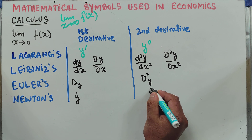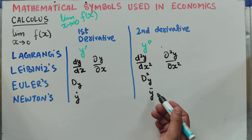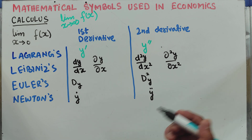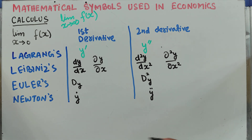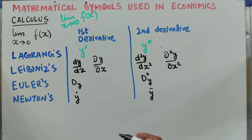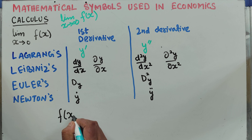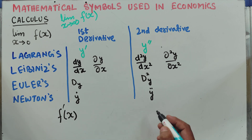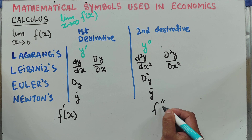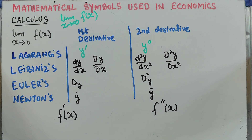Newton's second derivative is denoted by y double dot. We also have another notation — f prime of x — which denotes the first derivative, and f double prime of x denotes the second derivative. So this was all about the calculus derivative notations.